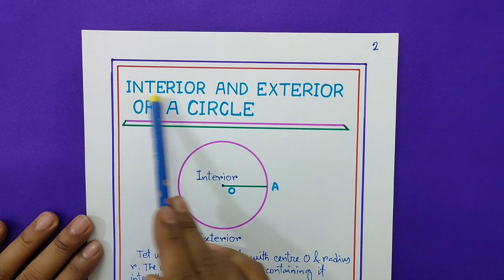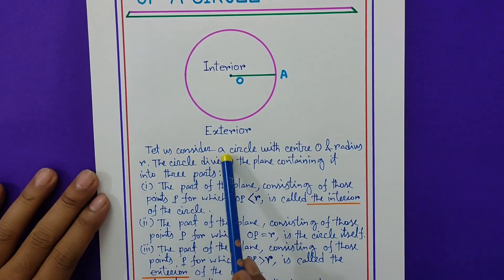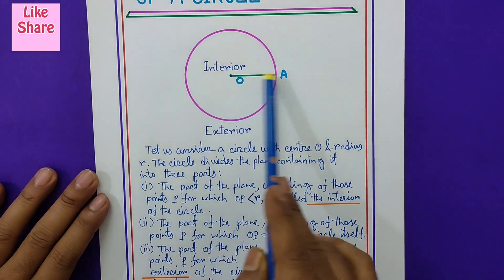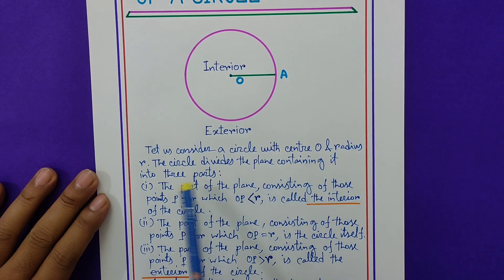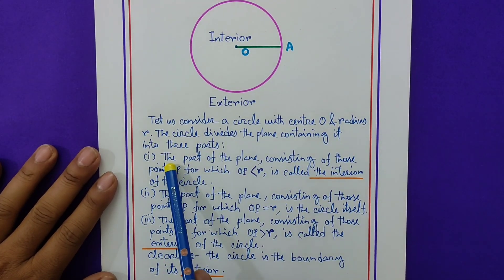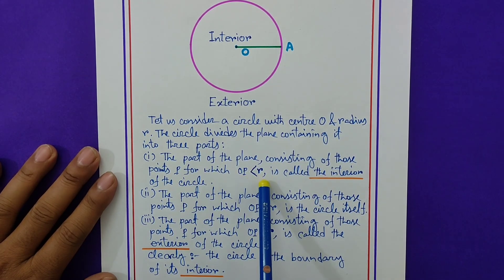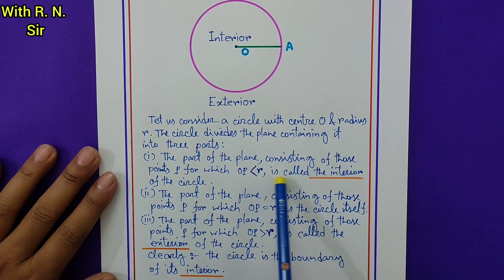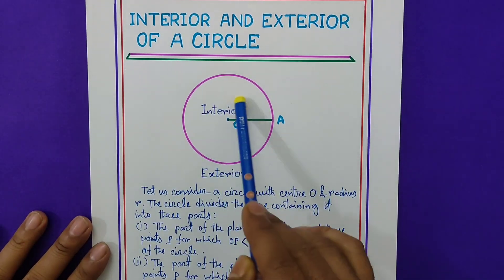Page number 2: interior and exterior of a circle. Consider a circle with center O and radius R, so OA is the radius. The circle divides the plane containing it into three parts. Point 1: the part of the plane consisting of those points P for which OP is less than R — meaning OP distance is less than radius R — is called the interior of the circle. The interior part means the inside part.